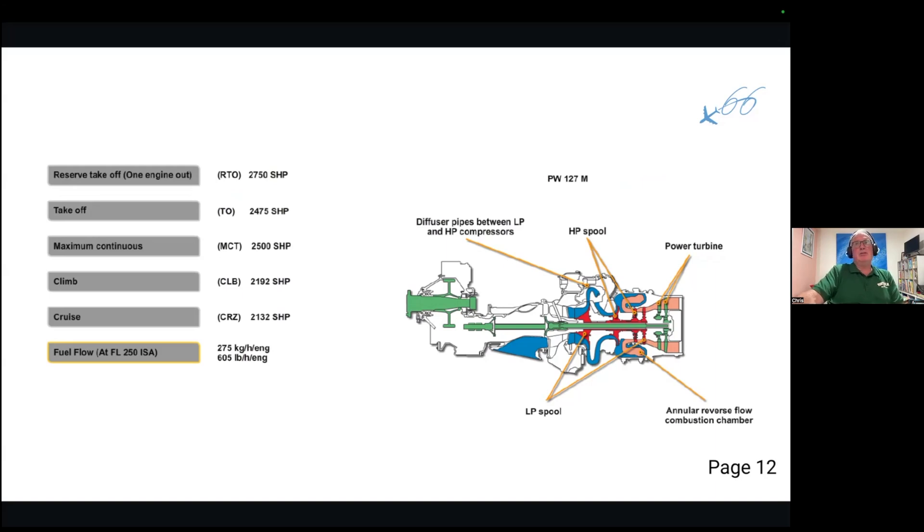As it's a turboprop, the power is measured in shaft horsepower, not in pounds of thrust. The options we see here are reverse takeoff power, the max continuous power, the max continuous takeoff power, the climb, the cruise, and the fuel flow. Fuel flow is a really important thing in terms of when they want to sell this aircraft.